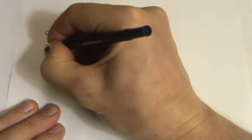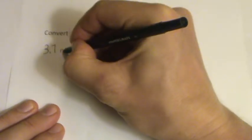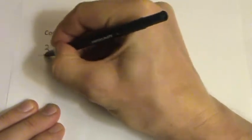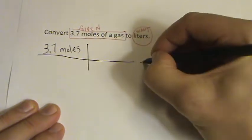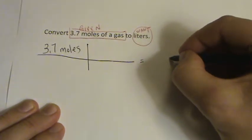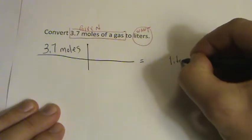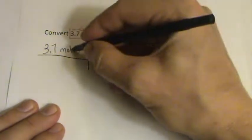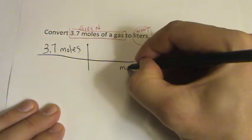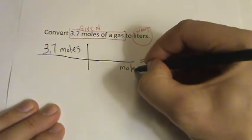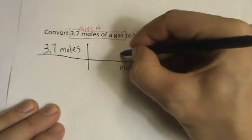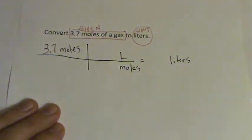We have 3.7 moles. Let's set it up like this. And I want to find liters as my final unit. So if I have moles up here, I'd better have moles on the bottom. Those will cancel out. And since I want liters here, I know that I can have liters on the top.